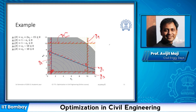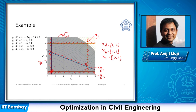Point a represents coordinates (1, 7), so xa equals (1, 7). Point b is xb equal to (1, 1). The third extreme point xc is (10, 1). The fourth point xd is (10, 2.5).